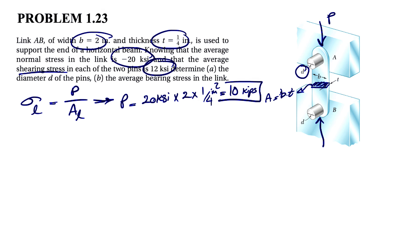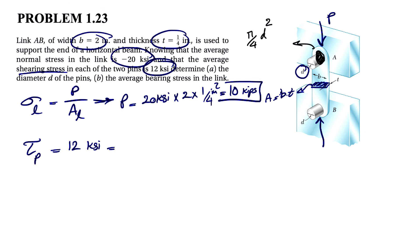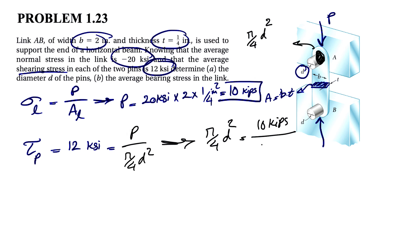Moving on to the next given: the average shearing stress on each pin is 12 KSI. The area for the pin is a circle, so the area is pi over 4 times D squared. Setting up the equation, 12 KSI equals force P divided by the area, where the area is pi over 4 times D squared. So pi over 4 times D squared equals force P, which is 10 kips, divided by 12 KSI.